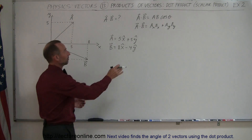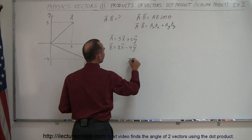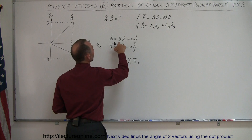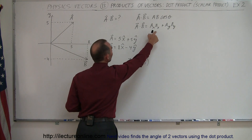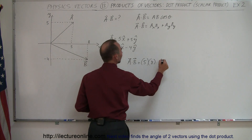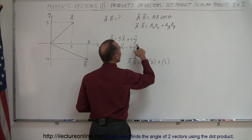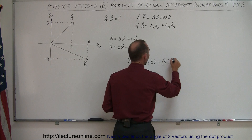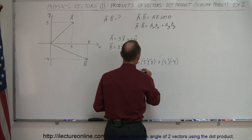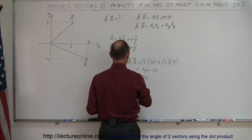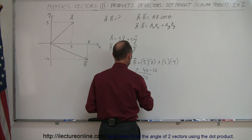We're going to use the second method. So A dot B is equal to A sub X times B sub X plus A sub Y times B sub Y. That gives us 5 times 8 plus 5 times negative 4, which is 40 minus 20, which equals 20. So A dot B is equal to 20.